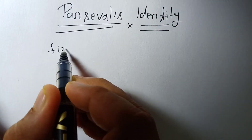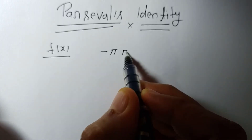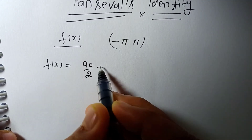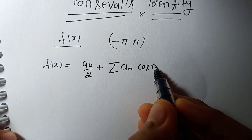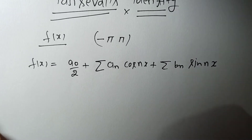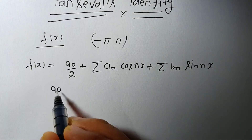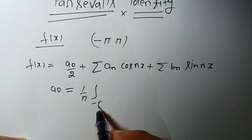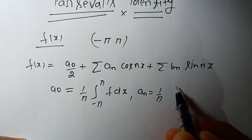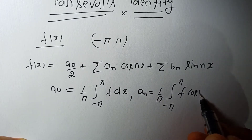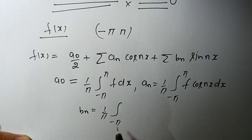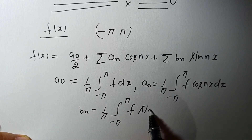Let f(x) be a periodic function defined on -π to +π. Then we can write the Fourier series: f(x) = a₀/2 + Σ aₙ cos(nx) + Σ bₙ sin(nx), where a₀, aₙ, and bₙ are the Fourier coefficients given by the Euler formulas: a₀ = (1/π)∫₋π^π f(x) dx, aₙ = (1/π)∫₋π^π f(x)cos(nx) dx, and bₙ = (1/π)∫₋π^π f(x)sin(nx) dx.